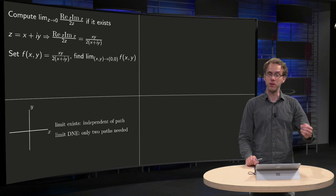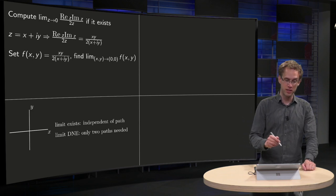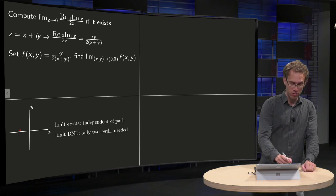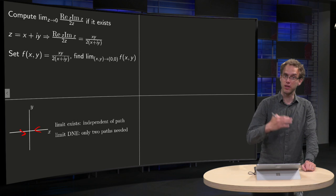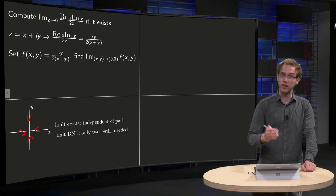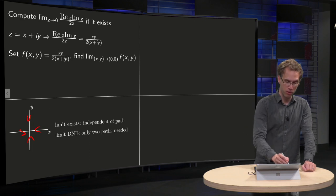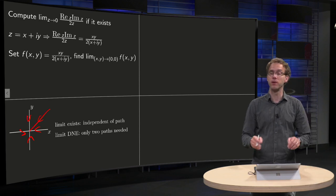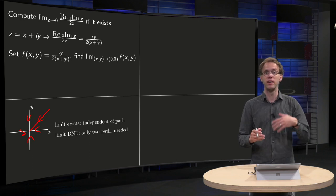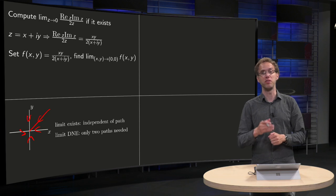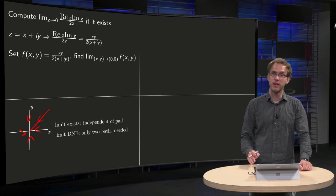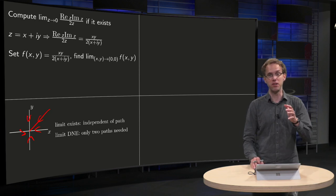In a limit like this, the limit should be independent of the path. If you go along the x-axis you get some limit, and if you go along the y-axis you get some limit, or along some other curve. This answer should be independent of the path you take. If the answer depends on the path then the limit does not exist, and if the answer is the same for all possible paths, then the limit exists and equals that value.